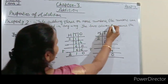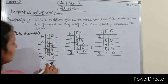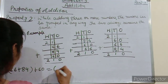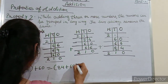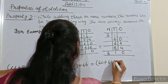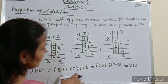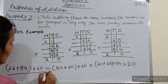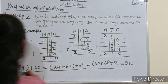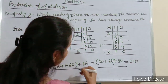While adding 3 or more numbers, the numbers can be grouped in any way — see how I have grouped these numbers — but the sum always remains the same. So 66 plus 84 plus 60 equals 84 plus 60 plus 66 equals 60 plus 66 plus 84, all equal to 210.